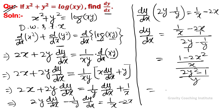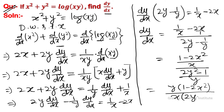So the final answer equals y times (1 minus 2x square) upon x into (2y square minus 1) upon y. This is the answer.